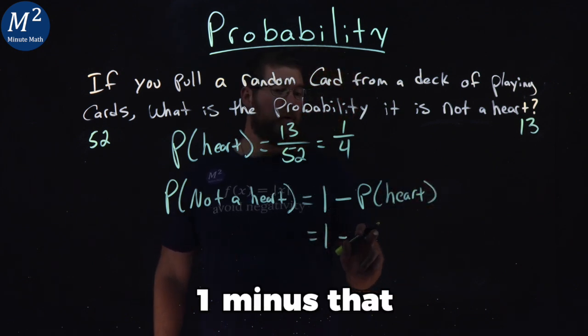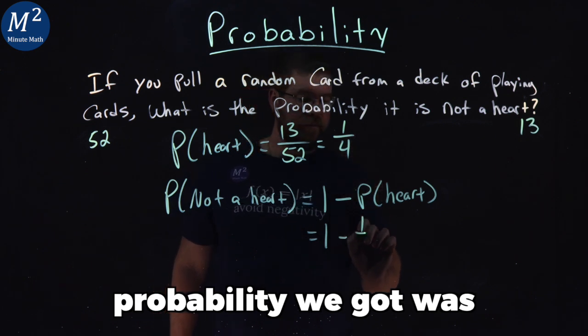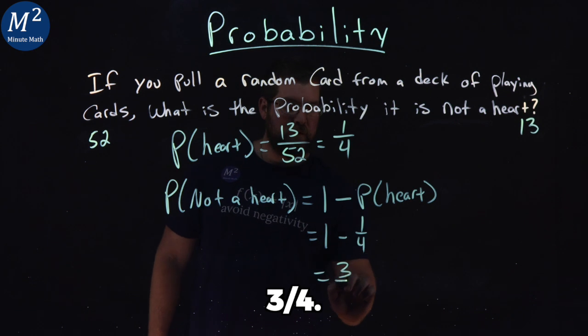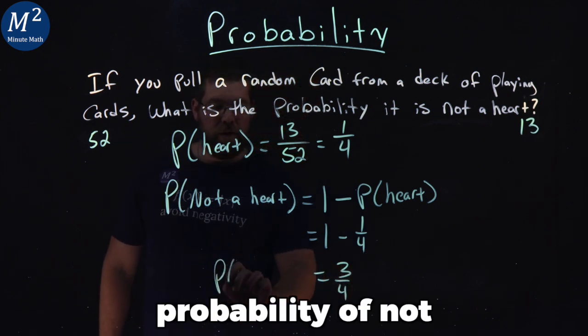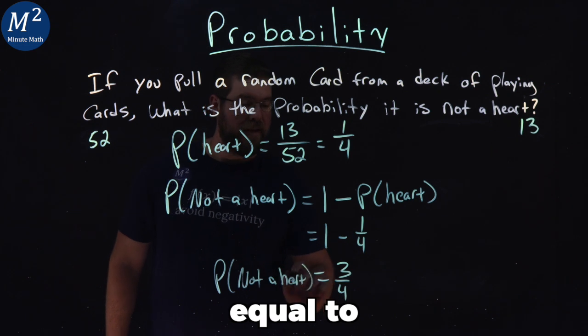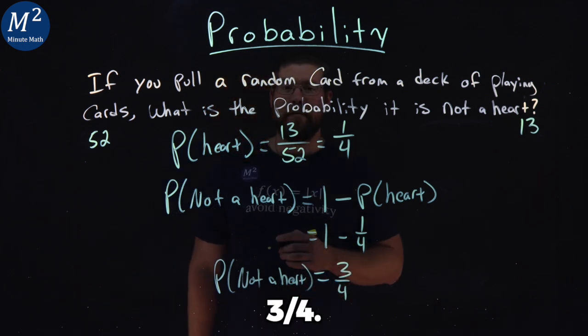One minus that probability we got was one-fourth, and one minus one-fourth is three-fourths. So the probability of not a heart is equal to three-fourths.